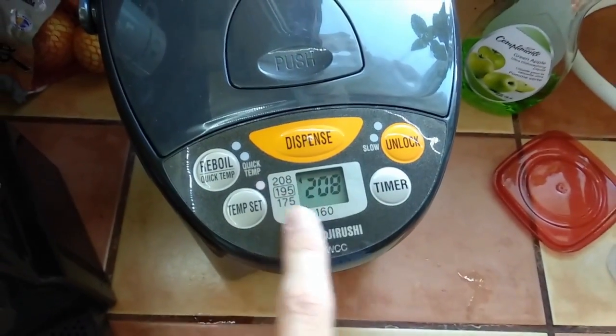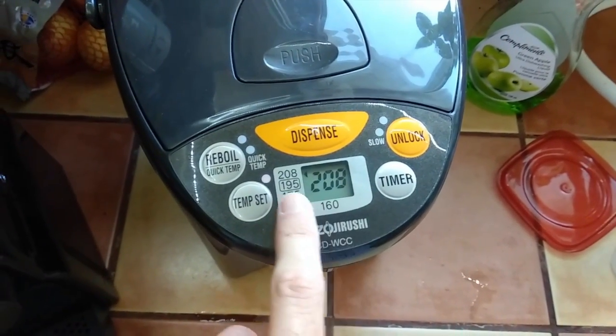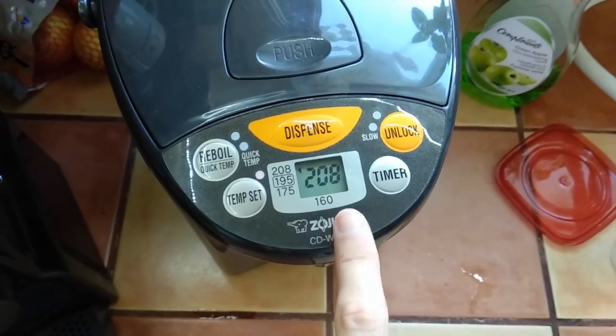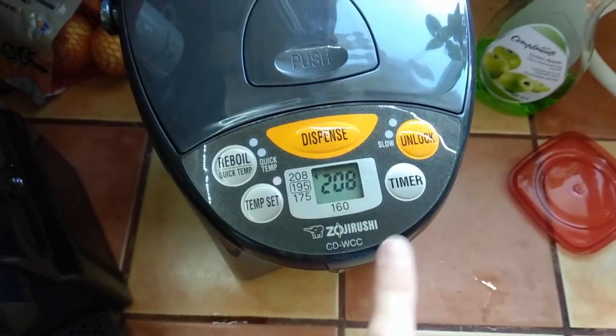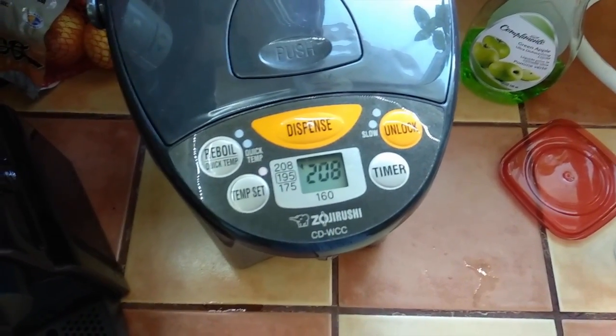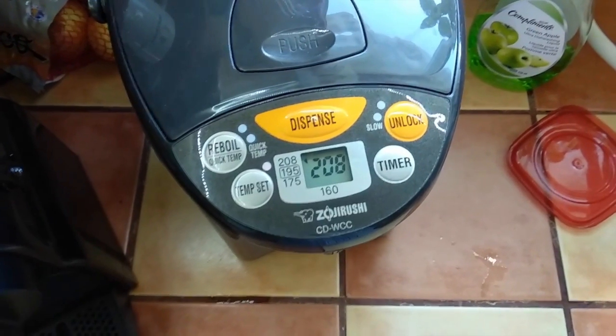The water heater is keeping the water at a certain temperature. Here it indicates that it's keeping it at 208, but no unit is written. So 208 what? Is this Celsius, Fahrenheit, Rankine, Kelvin? What do you think?